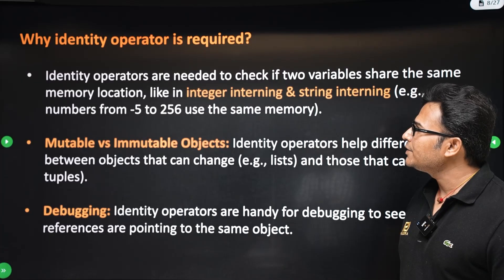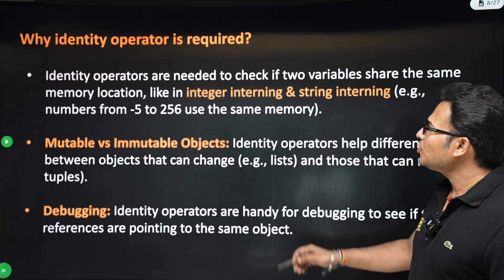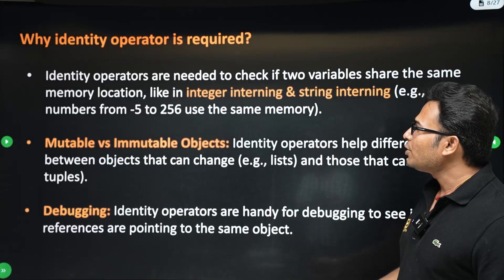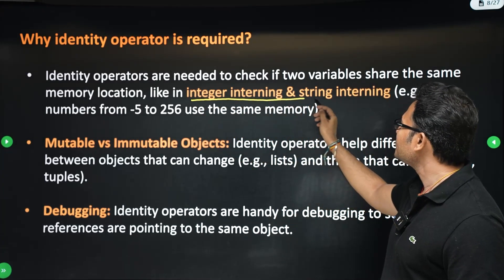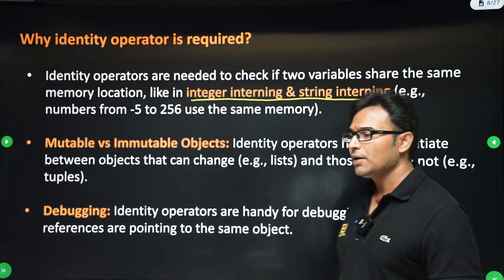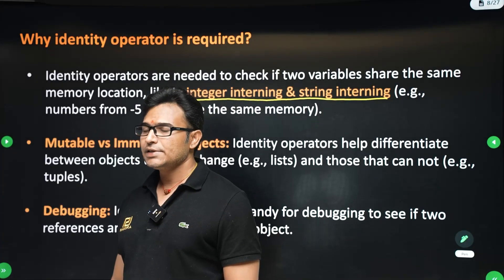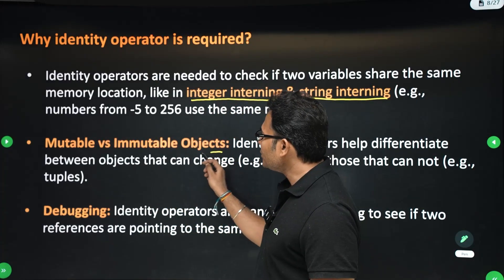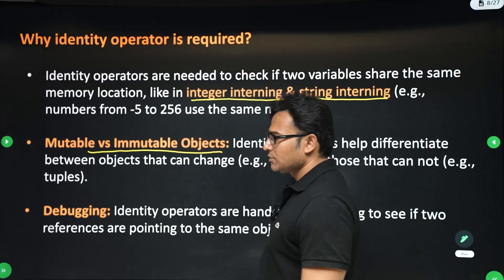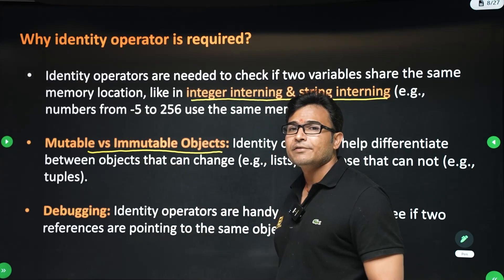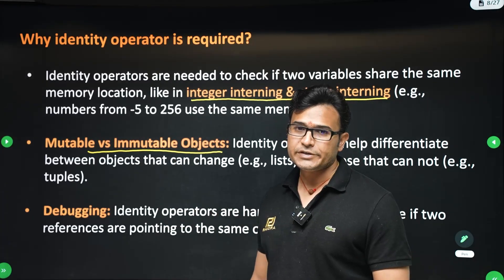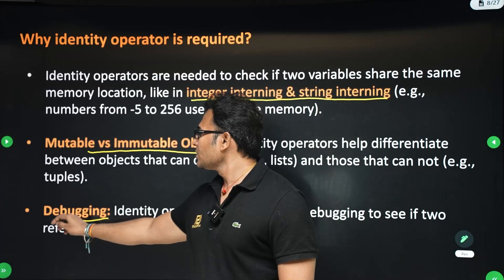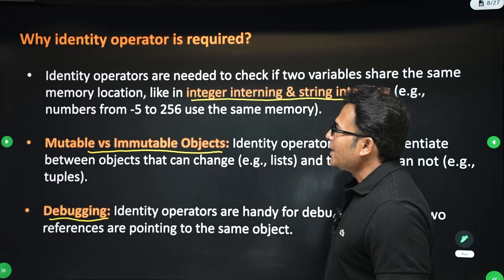Why do you need the identity operator? It is needed to check if two variables share the same memory location. You've already seen integer interning and string interning — sometimes it is helpful to know both objects share the same memory space. You can also distinguish between mutable and immutable objects: in mutable objects the address won't change, in immutable objects the address will change. Debugging will also be easier with the identity operator.